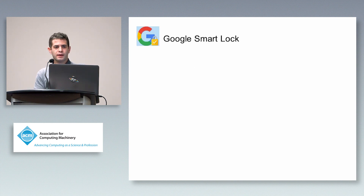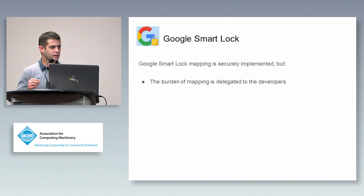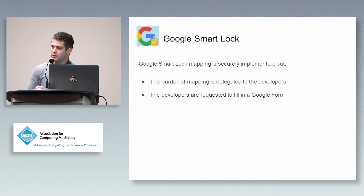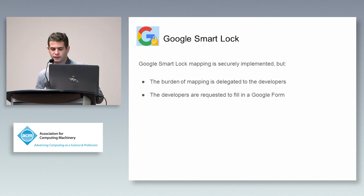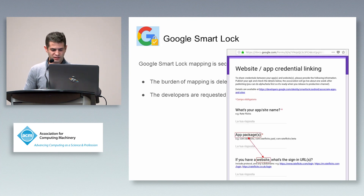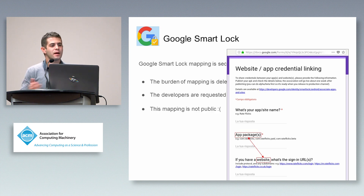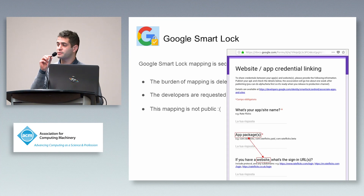Google Smart Lock is securely implemented — we found no vulnerabilities. But we also discovered that the burden of the mapping is delegated to the developer. If you are an Android developer and you want your application to be compliant with Google Smart Lock, you have to fill a Google form specifying the application package name and your website. Google then uses a protocol I will explain later. It works, but this mapping is not public — Google doesn't share it.